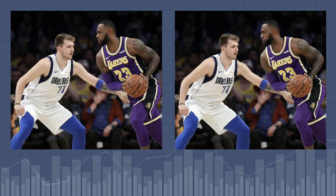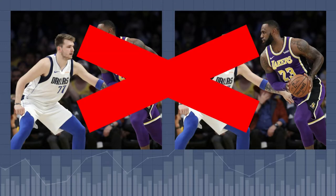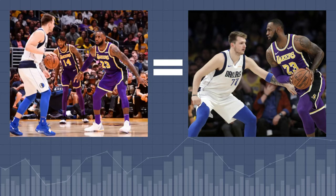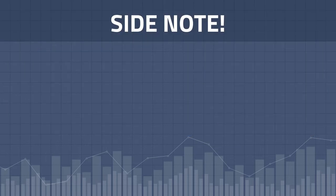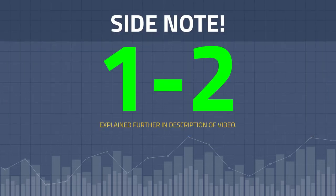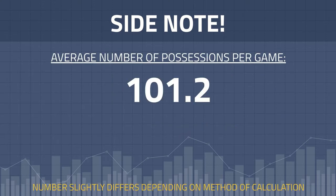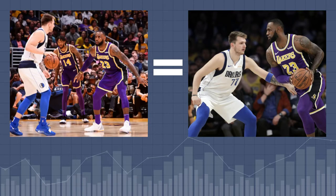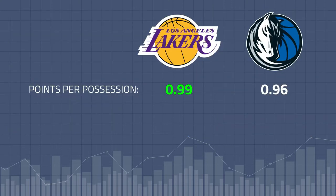This means that teams cannot have two possessions in a row. At the end of the game, both teams will have the same number of possessions. Quick side note: it is possible to have one or two more possessions than your opponent at the end of the game — I'll explain why in the description of this video. But the average NBA game has over 100 possessions, so one team having two more possessions than their opponent really doesn't make much of a difference.